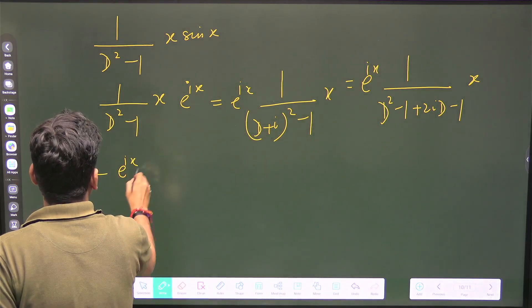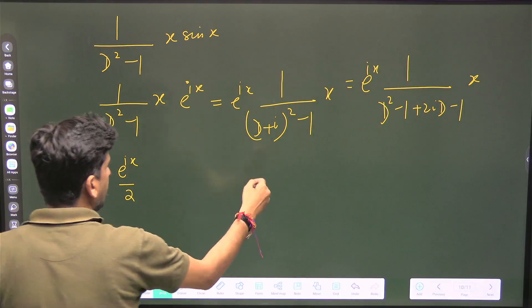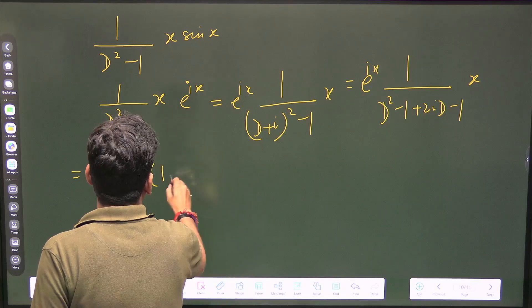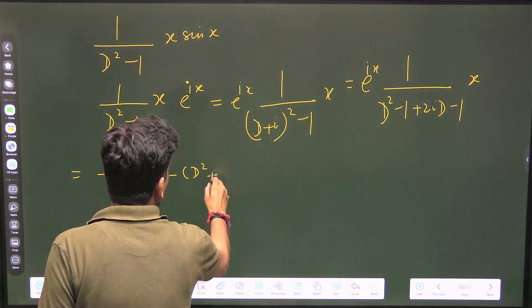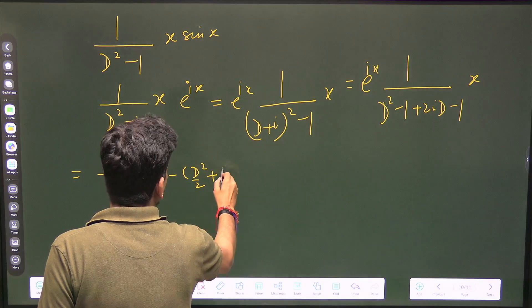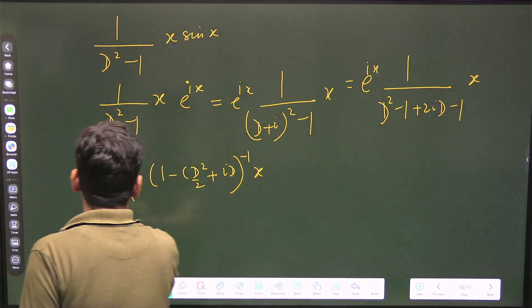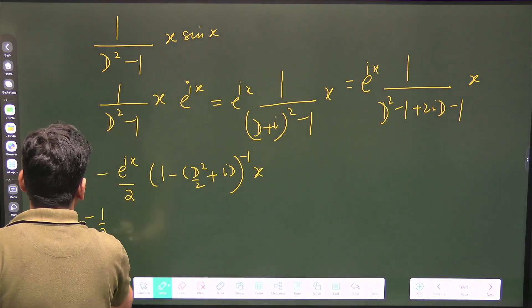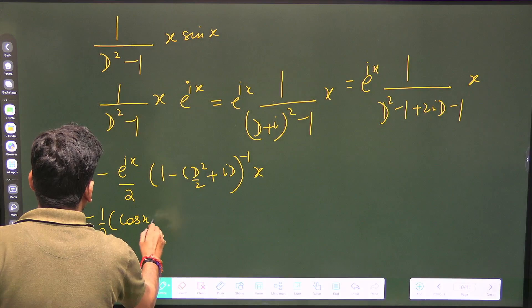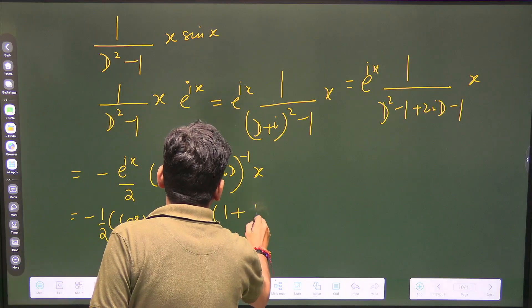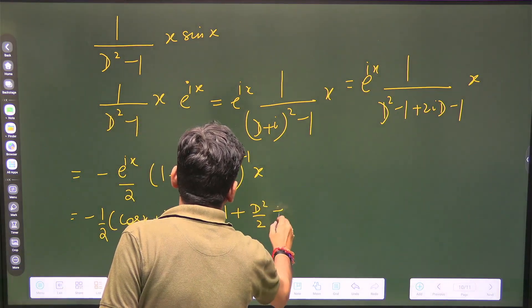...minus e^(iota x) by 2. I have taken minus 2 common and it will become [1 - (d²/2 + id)]^(-1) × x. And it will become -1/2 (cos x + i sin x) × [1 + d²/2 + id] × x.